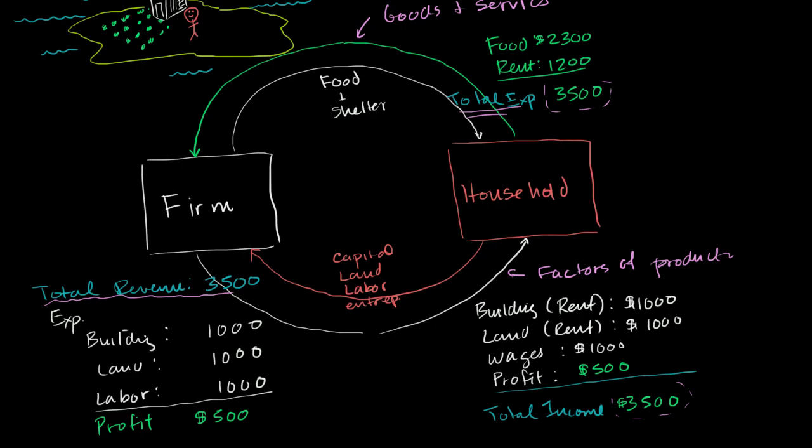So what you could do, you could just measure only one of these things. You could say your GDP, your gross domestic product, is the total expenditures by the households, so it would be the $3,500. You could say it is the total income by the households, so that would also be $3,500. And the total revenue really is the same thing as the total expenditures.